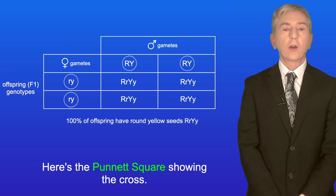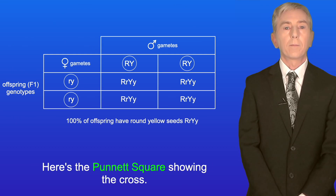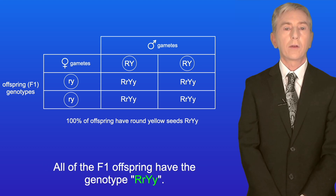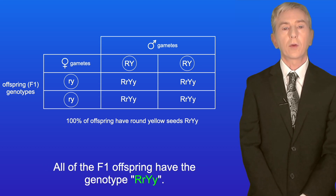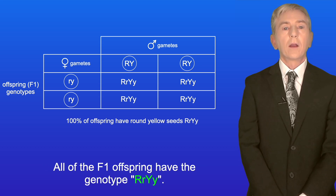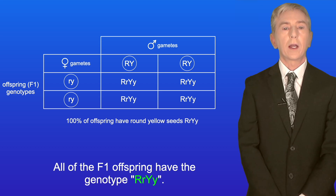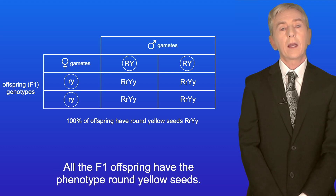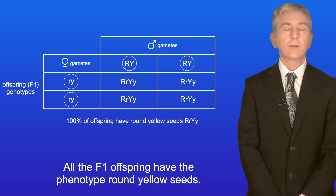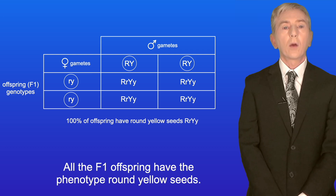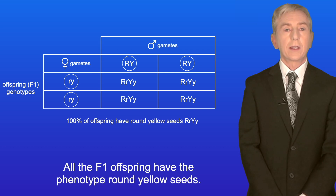Here's a Punnett square showing the cross. All of the F1 offspring have the genotype capital R, lowercase r, capital Y, lowercase y. And all the F1 offspring have the phenotype round yellow seeds.